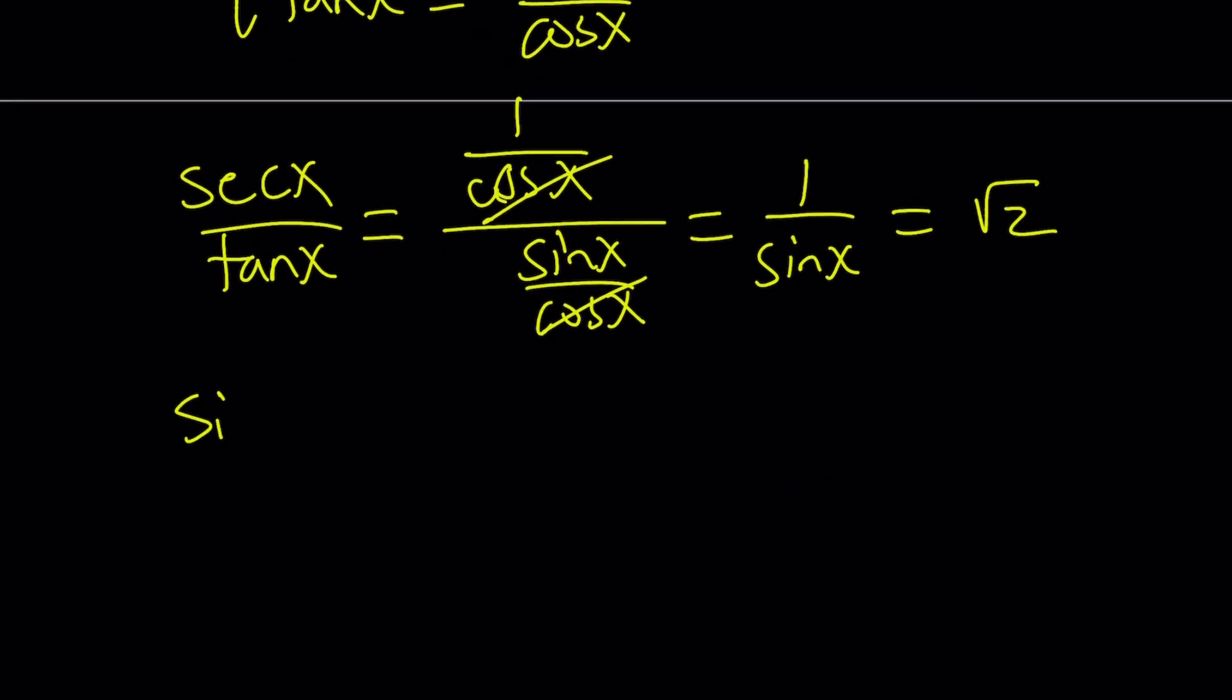Which implies sine x should not be 0, of course, and also sine x equals 1 over square root of 2, which can be written as root 2 over 2.